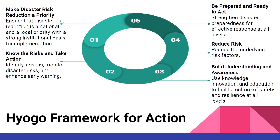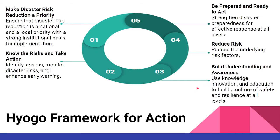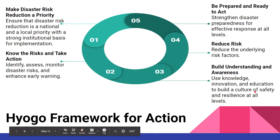The five major parts of the HFA program are: (1) make disaster risk reduction a priority — shifting from disaster response to disaster risk reduction; (2) know the risk and take action by identifying, assessing, and monitoring disaster risk; (3) be prepared and ready to act — strengthening disaster preparedness; (4) reduce underlying risk factors; and (5) build understanding and awareness by using knowledge, innovation, and education to build a culture of safety and resilience at all levels.